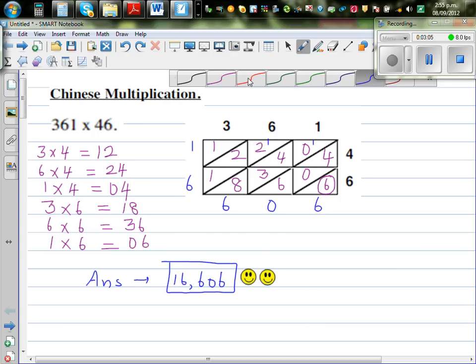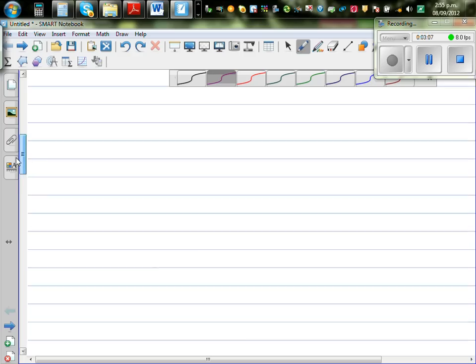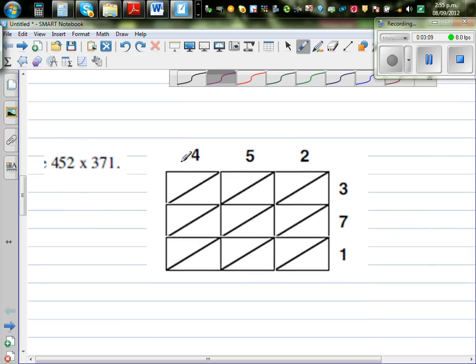So let's move on to the next question, which is a bit harder. Here you've got 3 digit times 3 digit. So you've got a grid of 3 by 3. So you write 452 on the top and 371. You can swap the numbers in any order, doesn't matter.